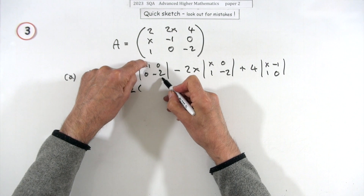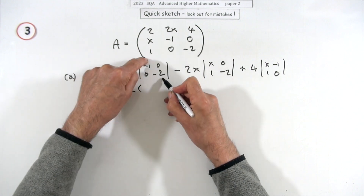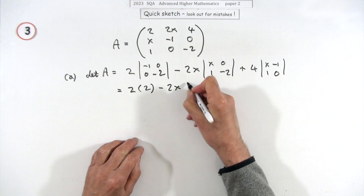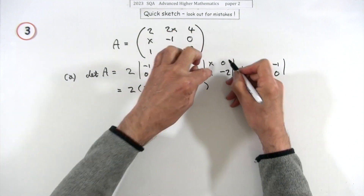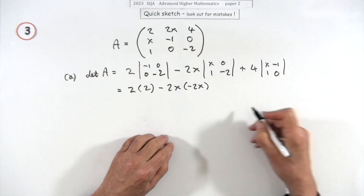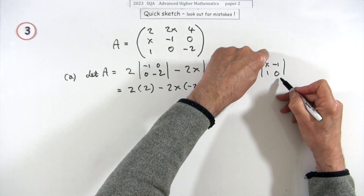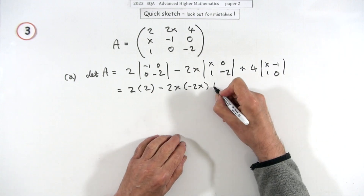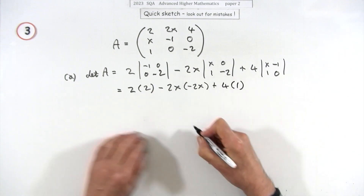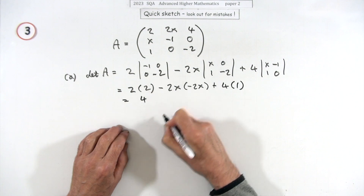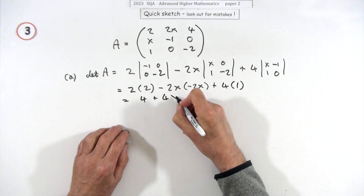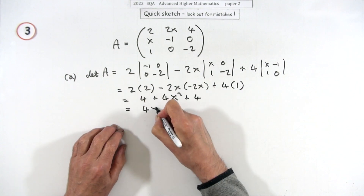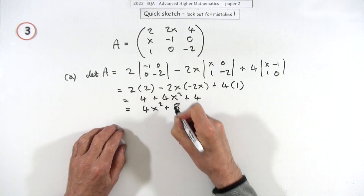Working that out — diagonal product minus the opposite diagonal: you get 2 times (negative two minus zero) = 2, minus 2x times (negative 2x minus zero) = negative 2x, and 4 times (zero minus negative one) = plus one. So you get 4 plus 4x² plus 4, which comes to 4x² + 8.